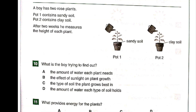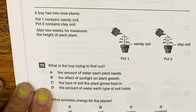A boy has two rose plants. Pot one contains sandy soil and pot two contains clay soil. After two weeks, he measures the height of each plant. Question number ten: What is the boy trying to find out? A. The amount of water each plant needs. B. The effect of sunlight on plant growth. C. The type of soil the plant grows best in. D. The amount of water each type of soil holds. The answer is C: the type of soil the plant grows best in.